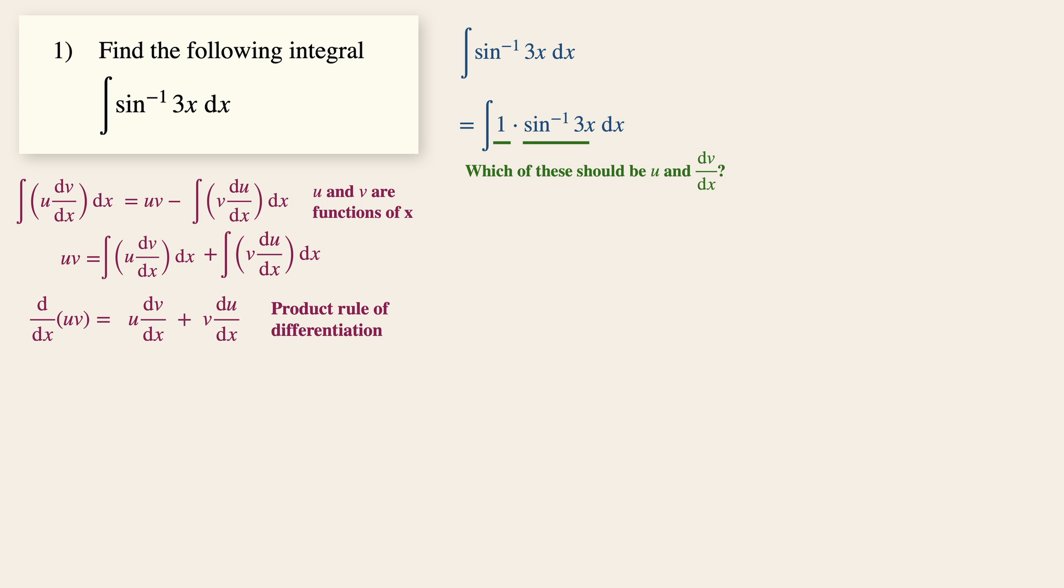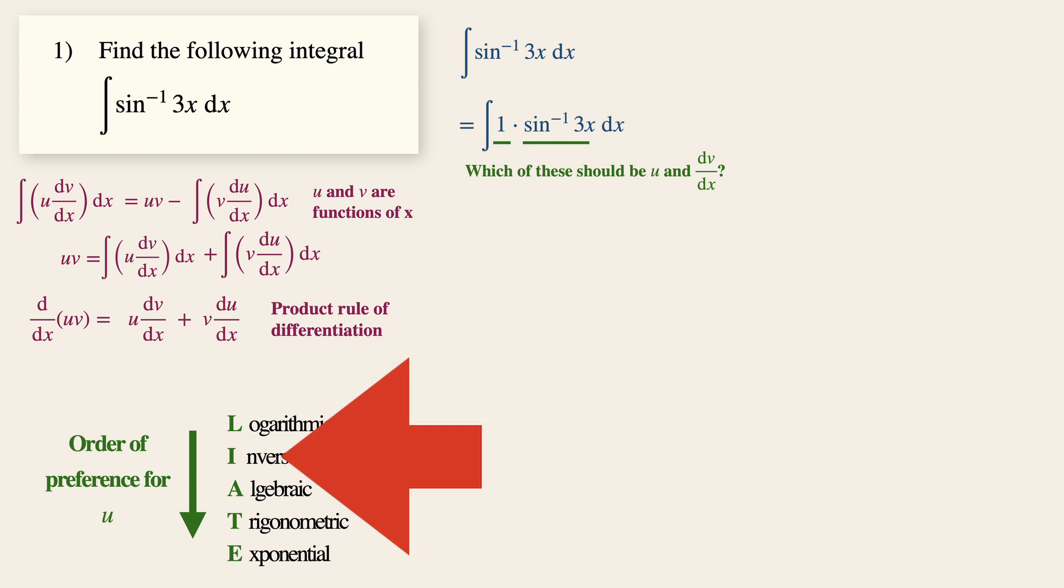In order to find the term u, all we need to do is to use this acronym LIATE. Because the inverse trigonometric ratio takes precedence over the algebraic expression, we will let u be sine inverse 3x while dv over dx equals 1.